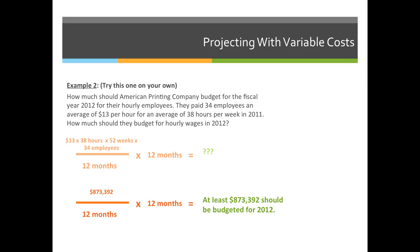If we're a good company and we give people raises, we have to incorporate that. But the very least we have to budget or set aside for salaries for the next year is $873,392.